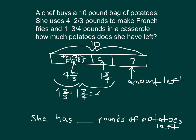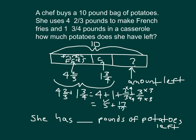Grouping the whole numbers, that's equal to four plus one plus two-thirds plus three-fourths. Four plus one is five. For the fractions, we find a common denominator: eight-twelfths plus nine-twelfths equals seventeen-twelfths. Putting seventeen-twelfths back as a mixed number gives one and five-twelfths. So that's five plus one and five-twelfths, which equals six and five-twelfths.